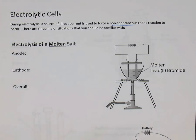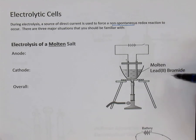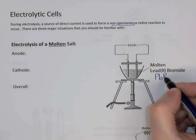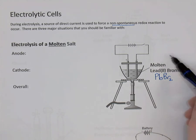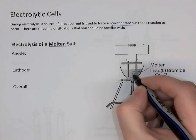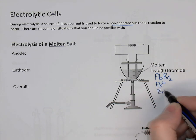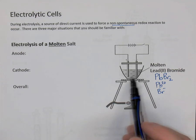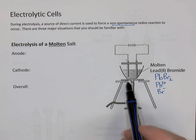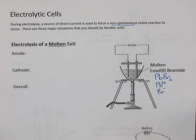The word molten means melted. Imagine you have a container being heated with a Bunsen burner, filled with lead(II) bromide, chemical formula PbBr2. It was filled with solid lead bromide, but as we heated it, it melted. So there are Pb2+ cations and Br- anions floating around in this liquid salt. Because it's liquid, the ions are free to move, so the salt is an electrolyte and can conduct electricity.